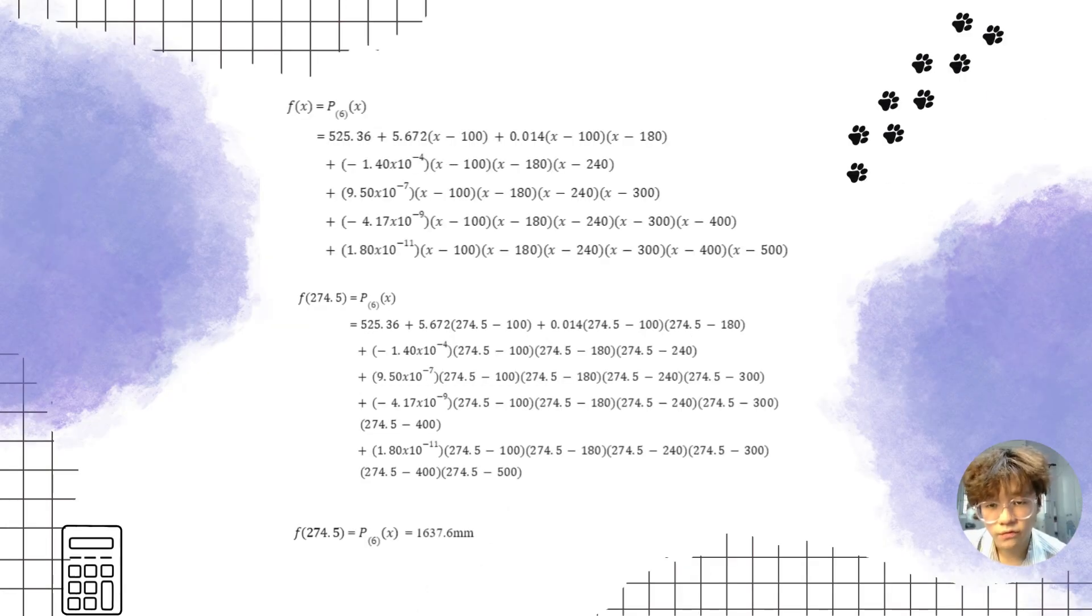For the last part, we need to find out the formula for the deflection of the beam when the support distance is at 274.5. And the formula equals to p(6)(x). And the 6 comes from the data collected. So the formula will begin with 525.36 plus 5.672(x-100) plus 0.014(x-100)(x-180) plus negative 1.6 times 10 power of negative 4(x-100)(x-180)(x-240) plus 9.50 times 10 power of negative 7(x-100)(x-180)(x-240)(x-300)...